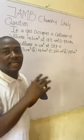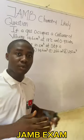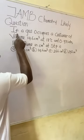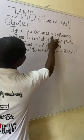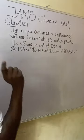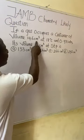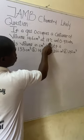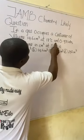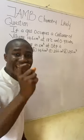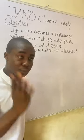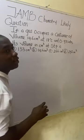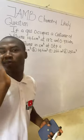If you came across this question in the JAM exam, how will you solve it? It's actually very easy. The question says: if a gas occupies a container of volume 146 cm³ at 18 degrees Celsius and 0.971 atm pressure, what is its volume in cm³ at STP?